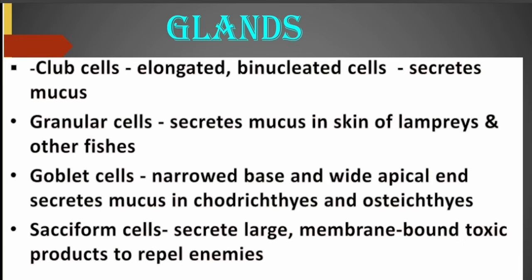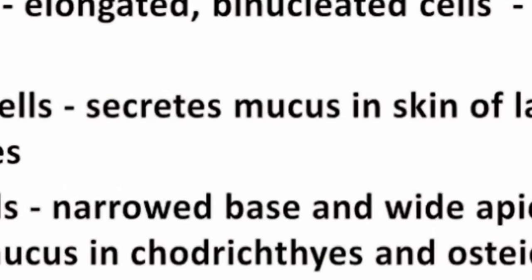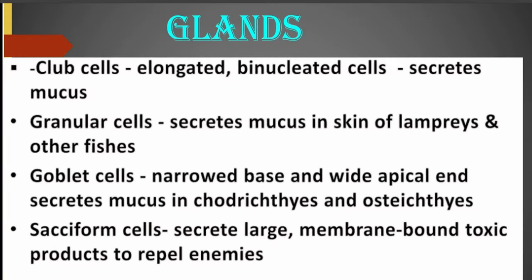There are also granular cells. The granular cells secrete mucus in the skin of lampreys and other fishes. Goblet cells are also present, with their narrow base and wide apical ends, and they secrete mucus in chondrichthyes and osteichthyes. Sarcoid cells are also present. These secrete large membrane-bound toxic products to repel enemies.